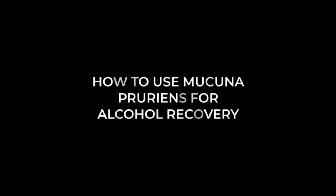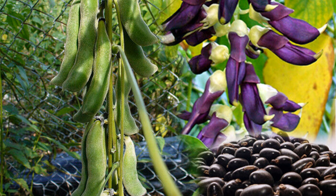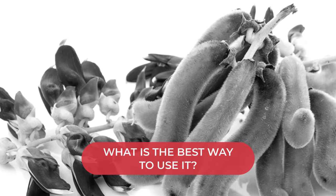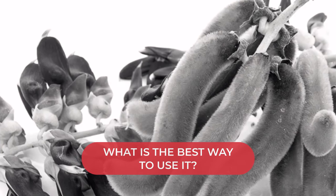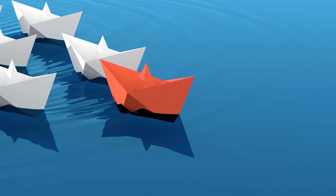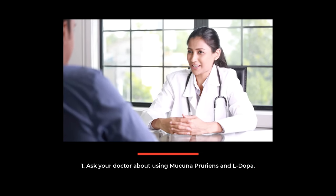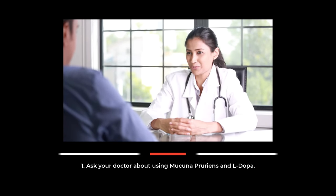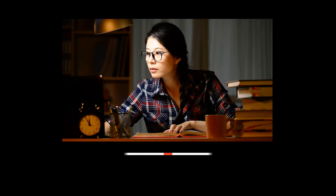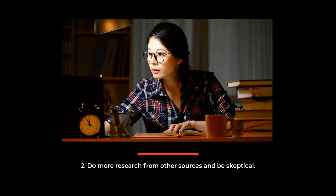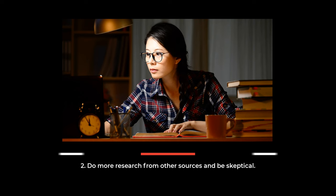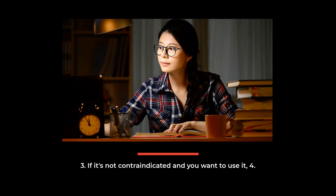How to use Mucuna Pruriens for alcohol recovery. Now that you've learned how awesome this tropical legume superfood supplement is, you might be wondering how exactly to use it and what brands and products might work the best. While this is not medical advice, the steps below can help you continue your journey by providing some helpful tips. Here's how to use Mucuna Pruriens for alcohol detox and recovery. One, find out if you're able to use Mucuna Pruriens from your doctor and make sure it isn't contraindicated with any medicines or health issues you have. Two, do more research from other sources and remain skeptical but rational. Three, if it's not contraindicated and you'd like to try it on yourself, go to step four.